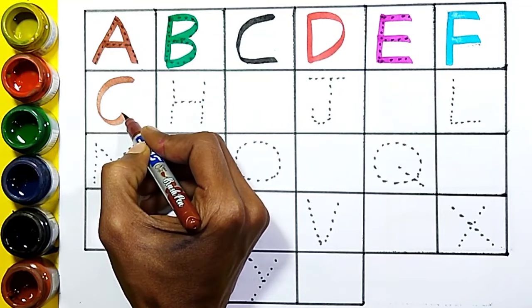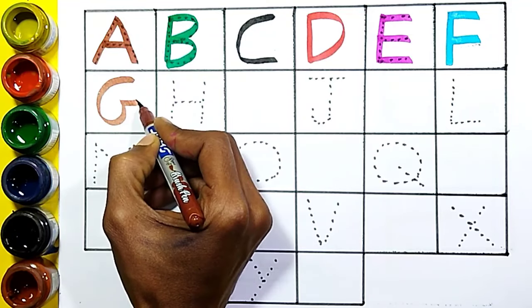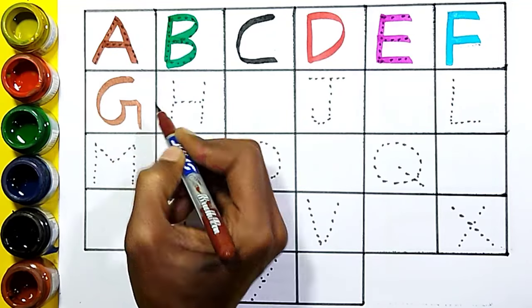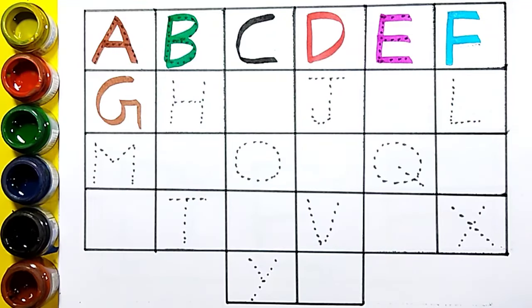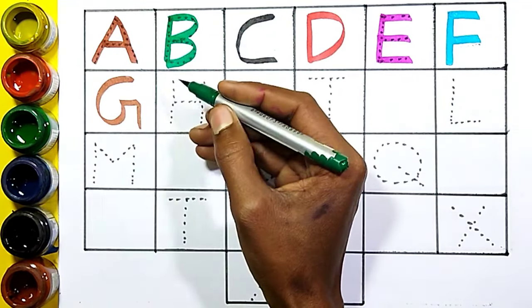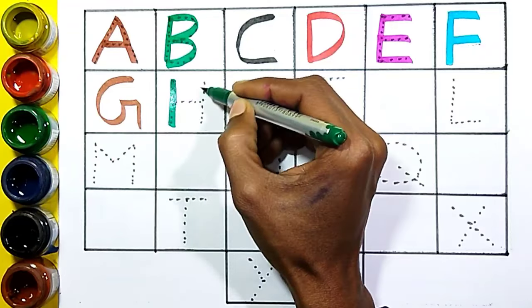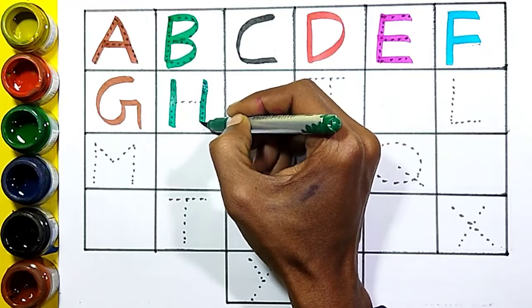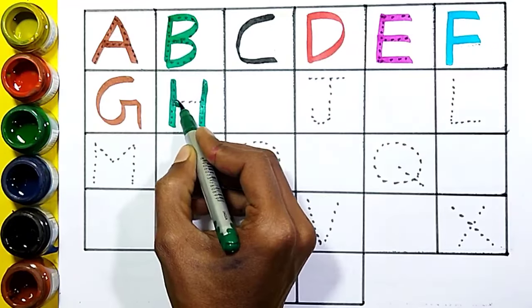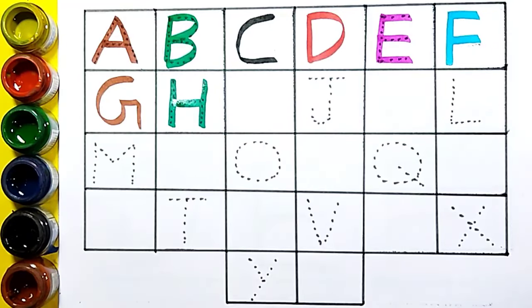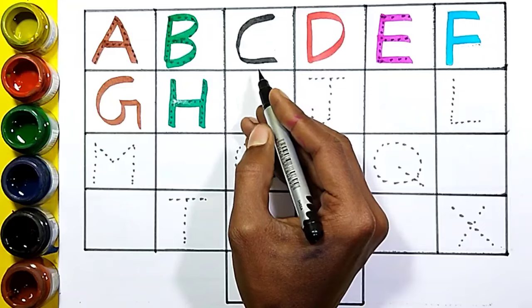G, G for grass, green color. H, H for hen, black color.